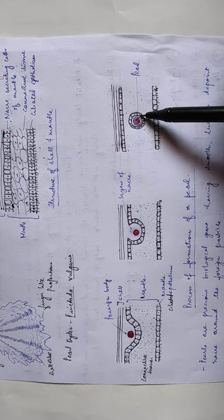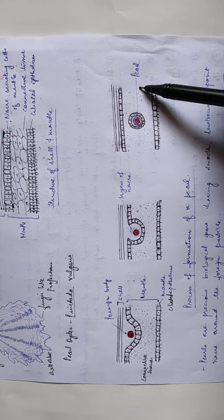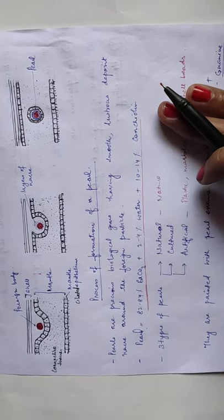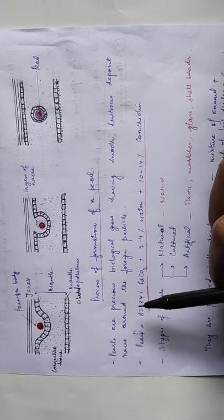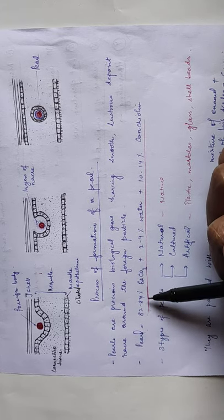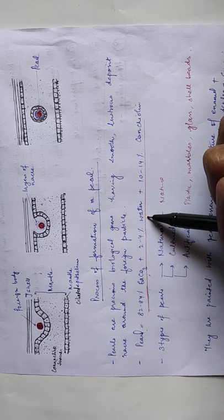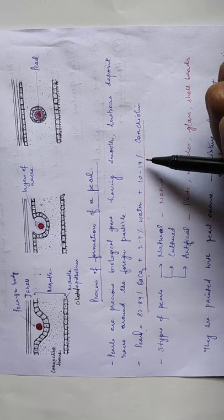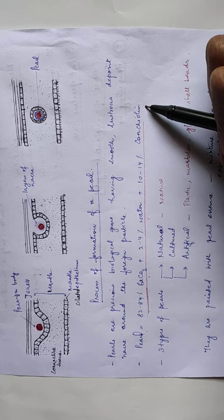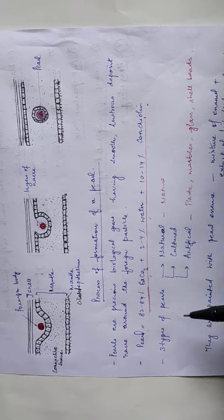Pearl comprises 80 to 84% of calcium carbonate, 2 to 4% of water, and 10 to 14% of conchiolin protein. So there are three types of pearls: natural, cultured, and artificial.